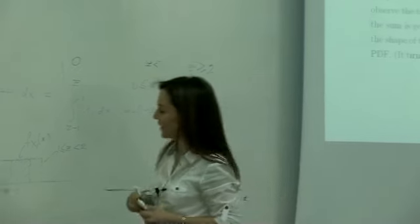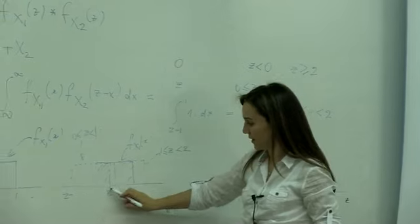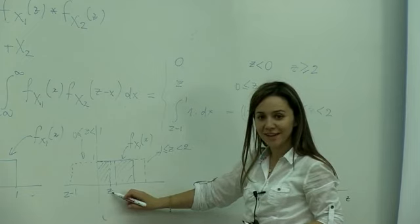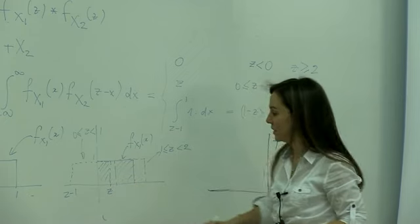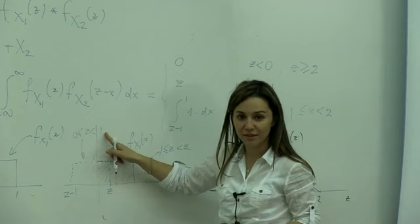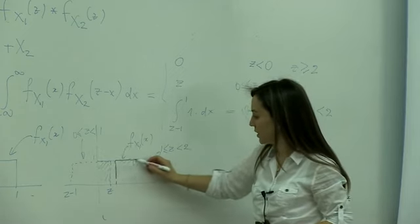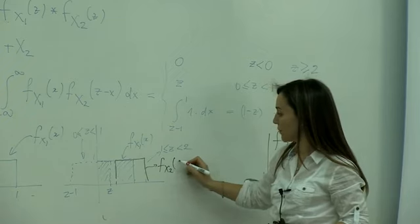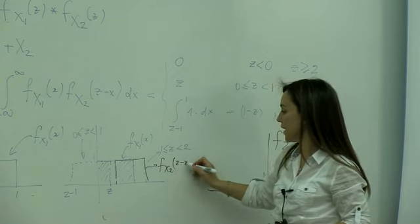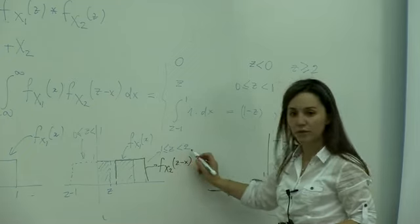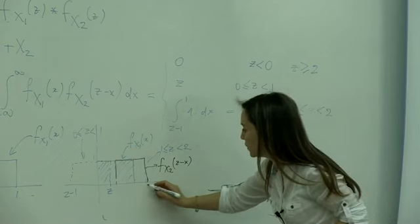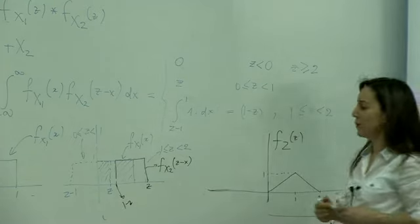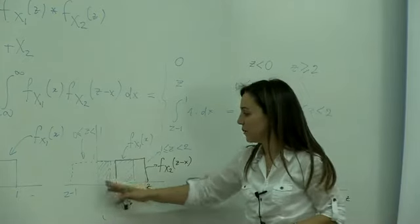The second function is sliding over the first function. This is its position when z is between 0 and 1, and this is its position when z is between 1 and 2. This end point is always equal to z and this other point is z minus 1. I used the same figure for two positions to be economical on the board.